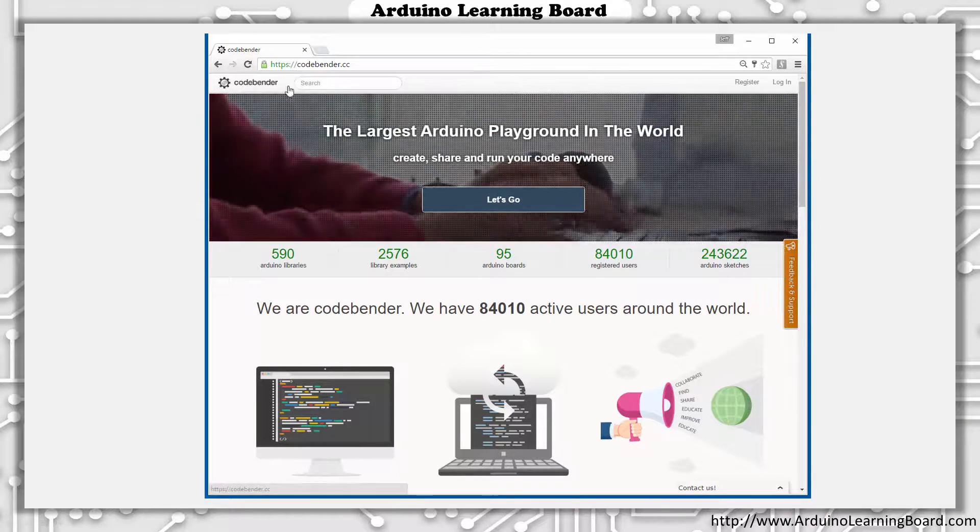Here we are on the CodeBender website. I'm going to click login. You want to log in with the account we created in the last section, or if you haven't created an account, please create one now. I'll use my Jeff demo account that we created in the last lesson. Since this is a new account, it's completely empty. We have no sketches. Sketches are what they call your programs, so we're going to create one. I'm going to click create sketch.